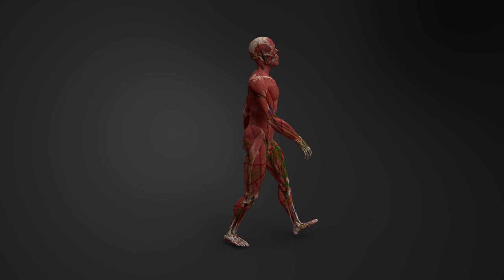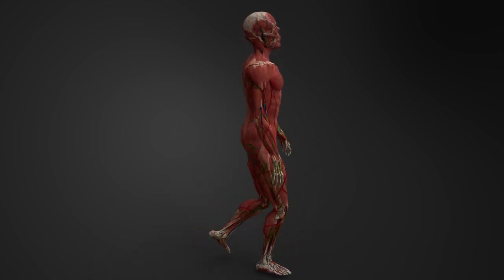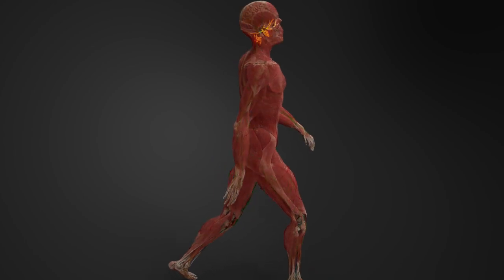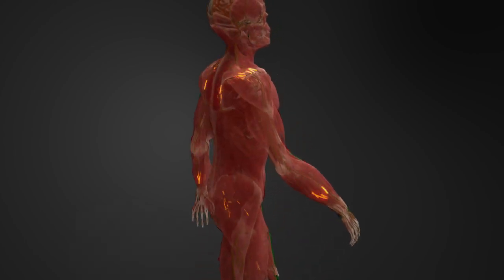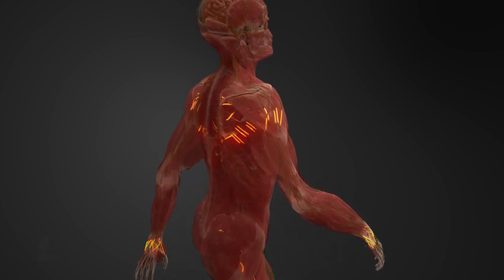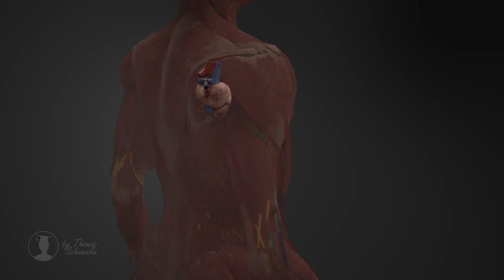Even the simple act of walking requires the complex interaction of all cells. For example, all muscle cells of the skeletal musculature must be controlled by nerve cells. The heart cells pump oxygen and other nutrients via blood vessel cells to all cells of the body.